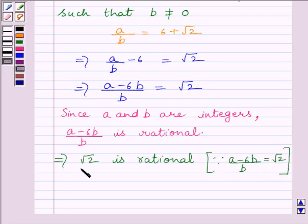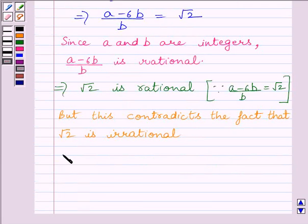But this contradicts the fact that root 2 is irrational. Therefore, our assumption that 6 plus root 2 is rational is wrong.